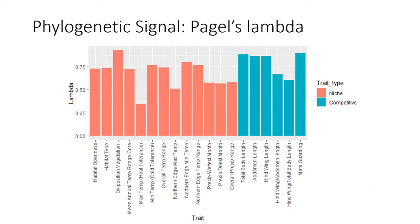For this I decided to use measures of both phylogenetic signal and wider phylogenetic conservatism. I measured phylogenetic signal using Pagel's lambda, which returns a value between zero and one — with one representing greater similarity in trait values between closely related species rather than distantly related ones, and zero representing no signal whatsoever. As you can see here, a lot of traits relating to both niches and competitive ability have high lambda values, indicating similarity between related species. Notably, while the phylogenetic signal of niche traits seems quite variable and trait-dependent, signal is strong across all competitive traits.